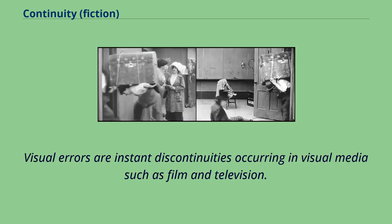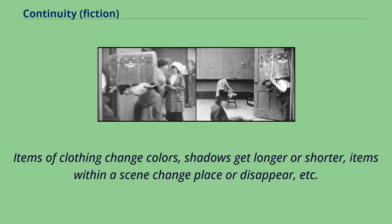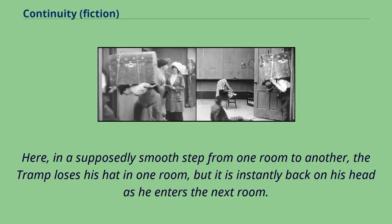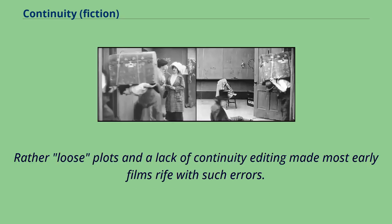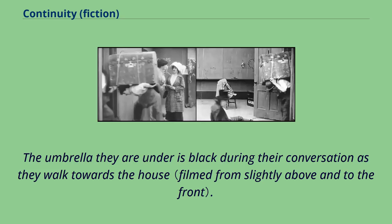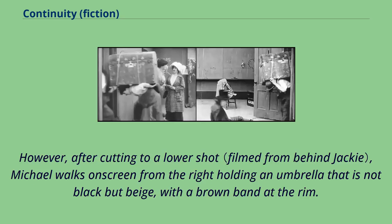Visual errors are instant discontinuities occurring in visual media such as film and television. Items of clothing change colors, shadows get longer or shorter, items within a scene change place or disappear, etc. One of the earliest examples of a visual error appears in Charlie Chaplin's 1914 movie The Property Man, where in a supposedly smooth step from one room to another, the tramp loses his hat in one room, but it is instantly back on his head as he enters the next room. Rather loose plots and a lack of continuity editing made most early films rife with such errors. Another example occurs in the 1998 film Waking Ned, when two of the film's characters, Jackie and Michael, are walking through a storm towards Ned's house. The umbrella they are under is black during their conversation as they walk towards the house. However, after cutting to a lower shot, Michael walks on screen from the right holding an umbrella that is not black but beige, with a brown band at the rim.